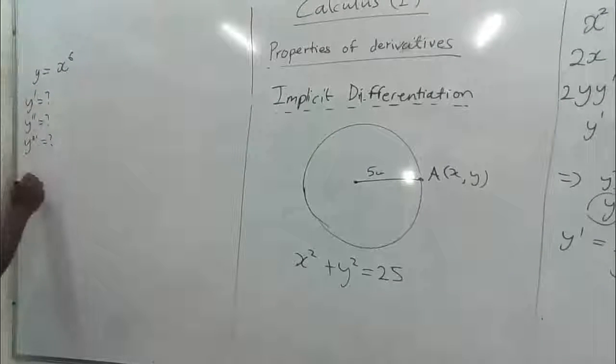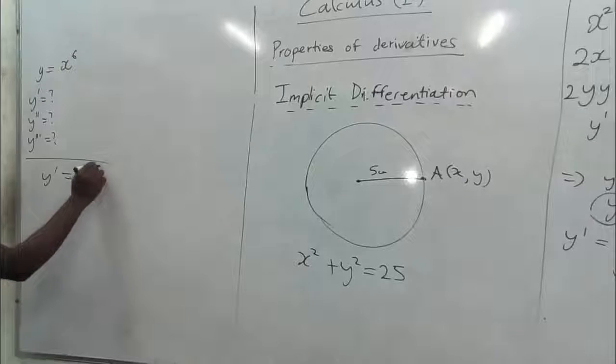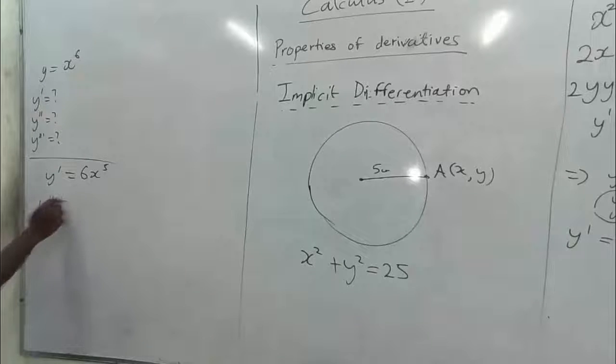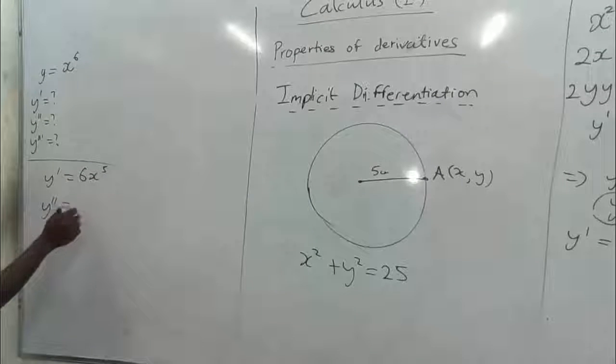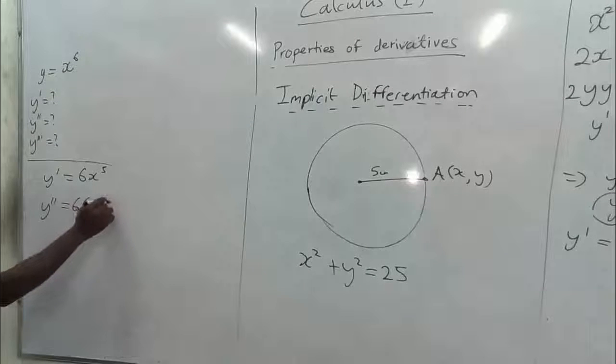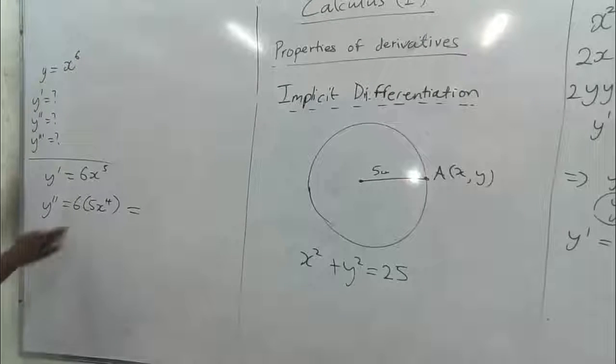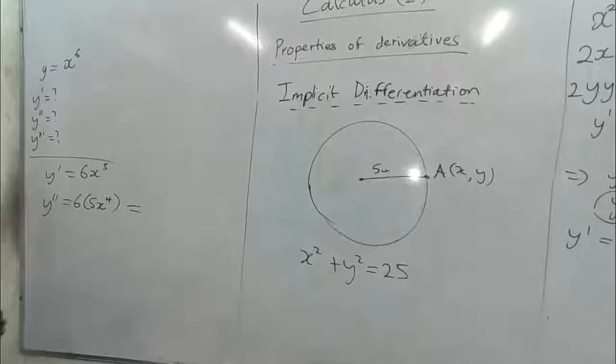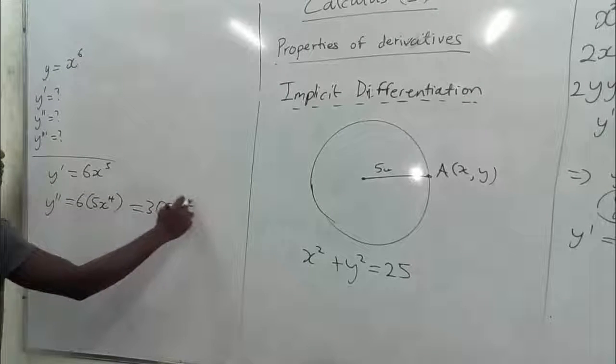If we have y prime to be 6x to the power 5, so taking the second derivative, that is y double prime, now we take this as our function, then we differentiate this, so we are going to get 6 times 5x to the power 4, then we simplify. 5 by 6 gives us 30x to the power 4.